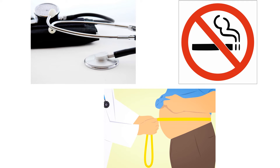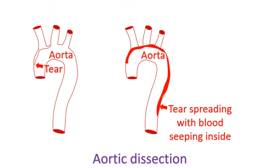Difference in blood pressure between the arms is more likely in the presence of these risk factors. Another important serious disease to consider in a person with pain in the chest or upper part of the back is aortic dissection.